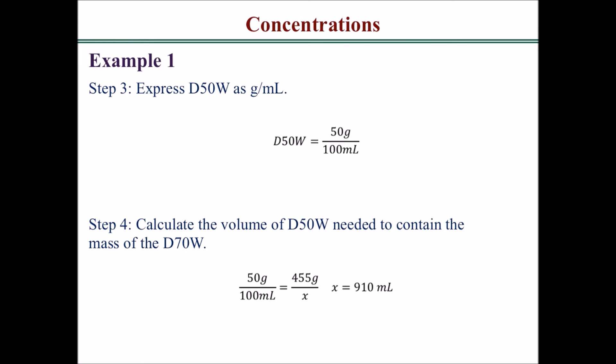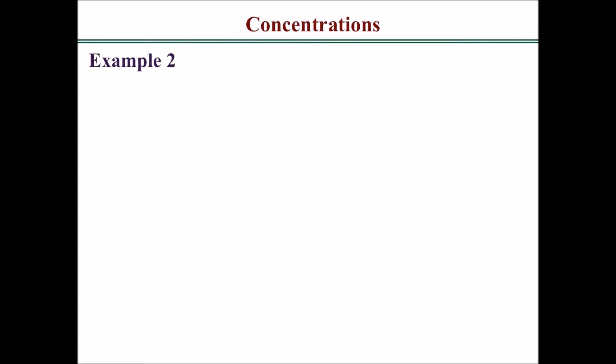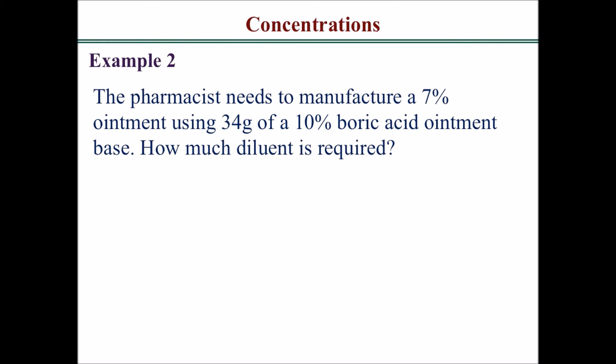So that would provide the equivalent energy requirement. Let's look at example two. The pharmacist needs to manufacture a 7% ointment using 34 grams of a 10% boric acid ointment base. How much diluent is required?